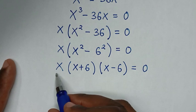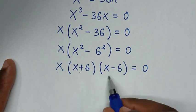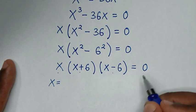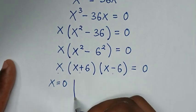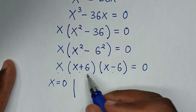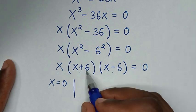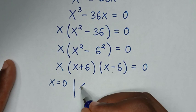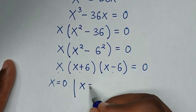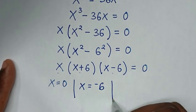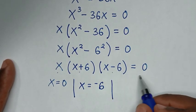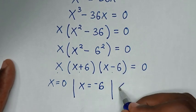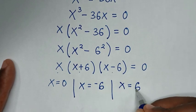From here we have 3 solutions. The first solution is x is equal to 0. The second solution: x plus 6 is equal to 0, so x is equal to negative 6. And the third solution: x minus 6 is equal to 0, so x is equal to positive 6.